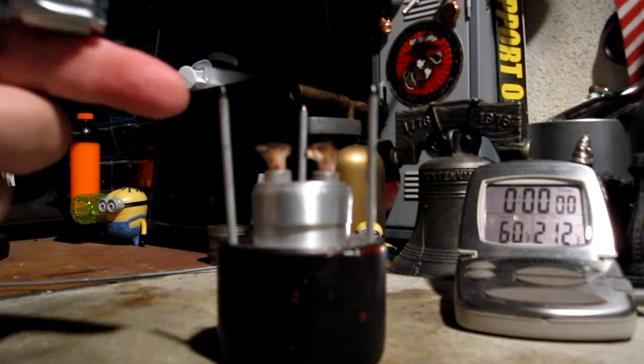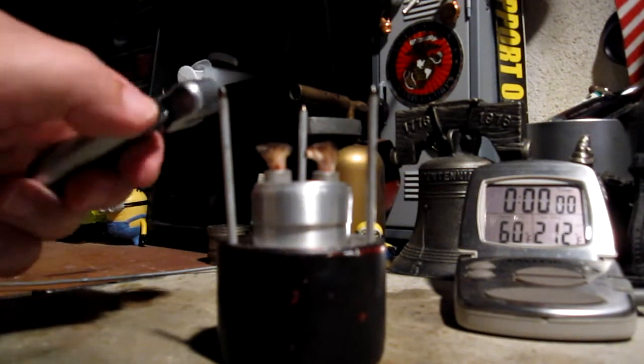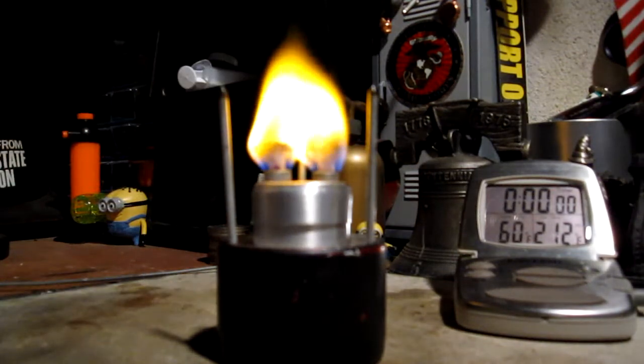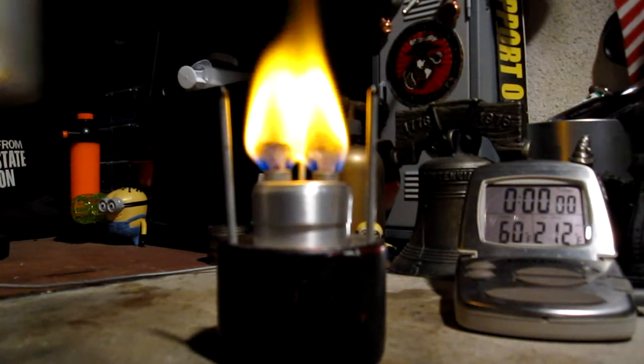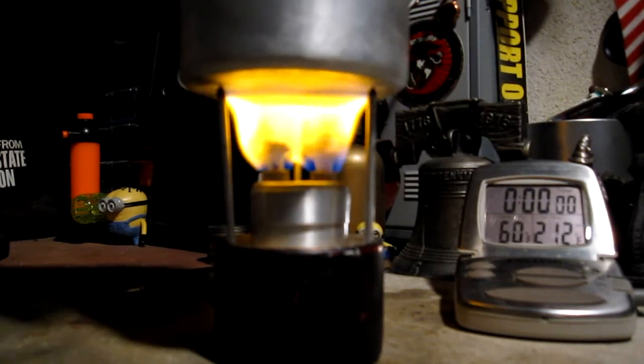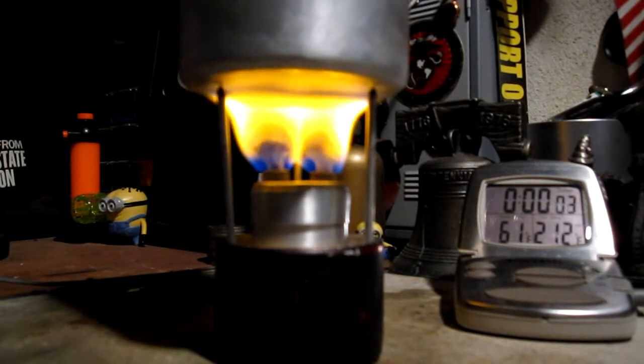I've got my water prepped. I've got one fluid ounce or 30 milliliters of methanol in here. Let's light it. This is one of the good things about wick stoves, they start right up. Two cups of water, sitting at 60 degrees. Let's see where this goes.